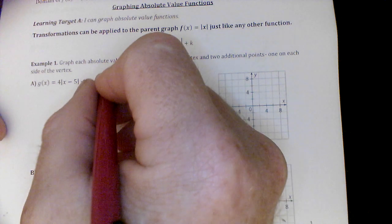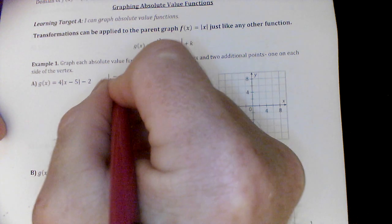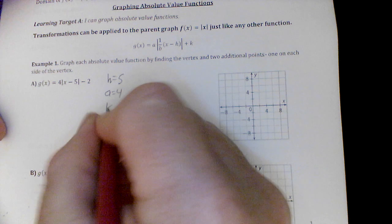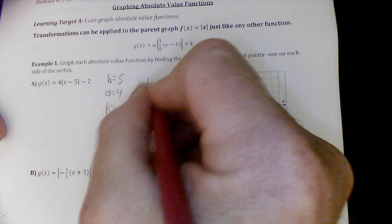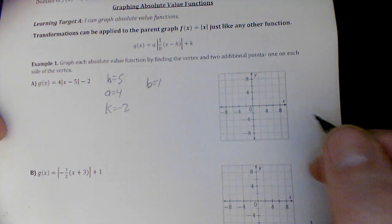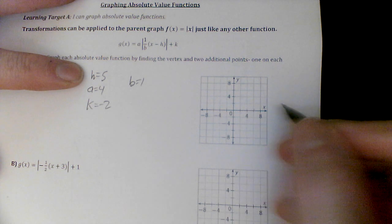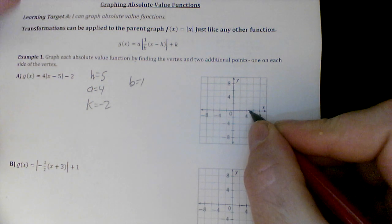So this one has no b, and they're going to do that quite often. That is 5. So we'll say h equals 5, a equals 4, k equals negative 2. We can list the b as 1. We don't have to.